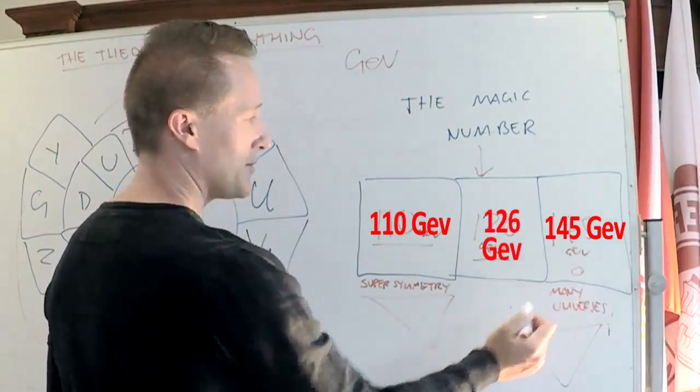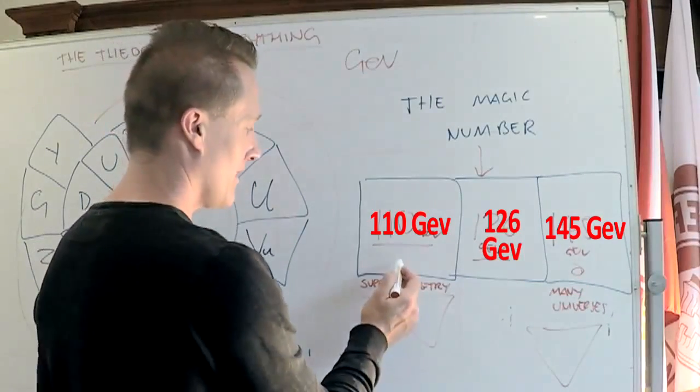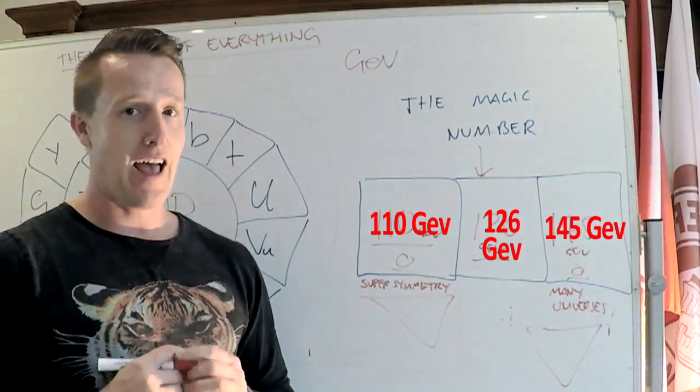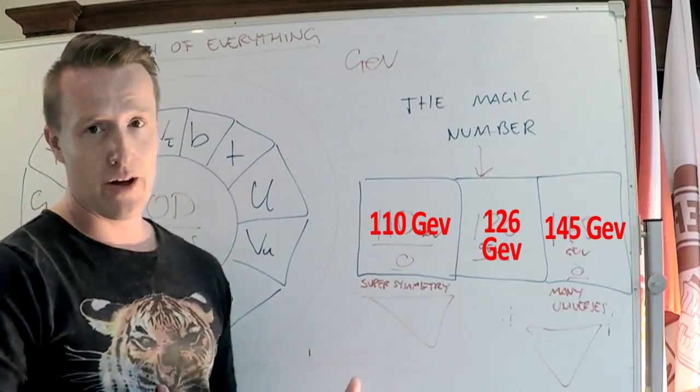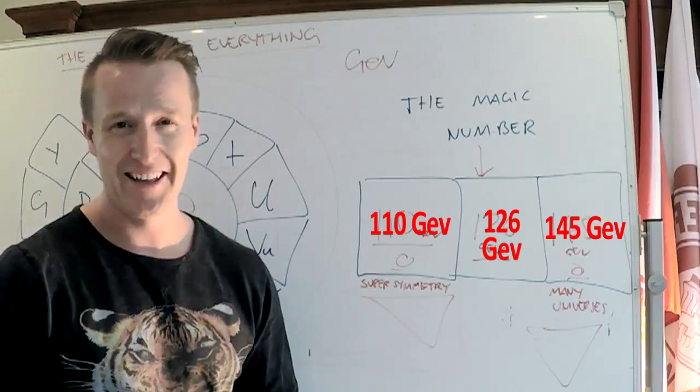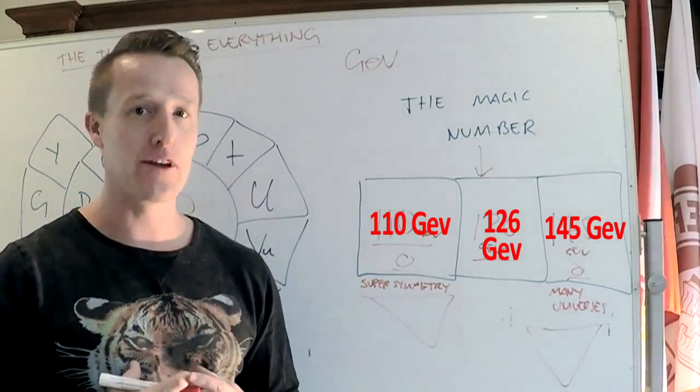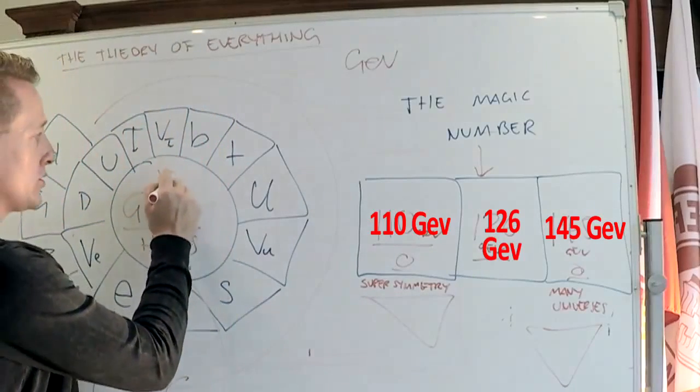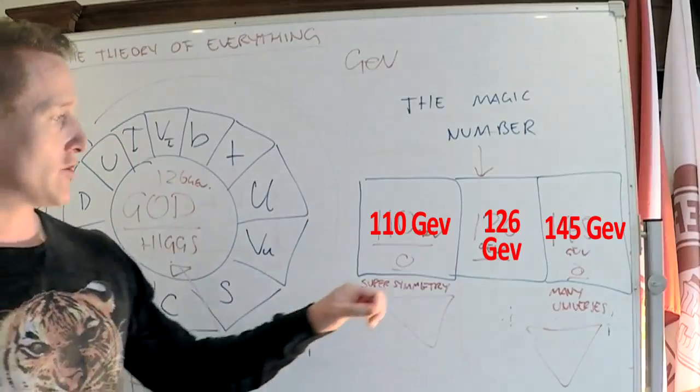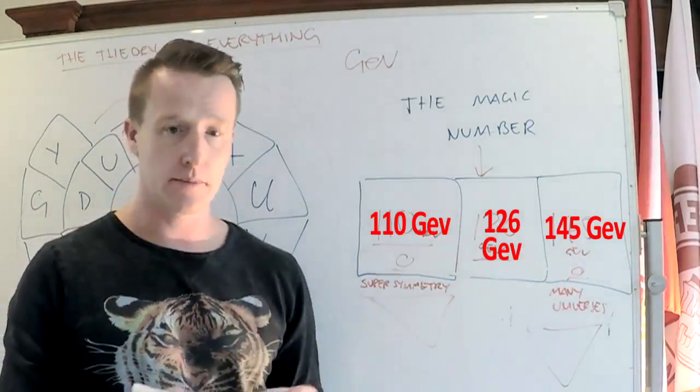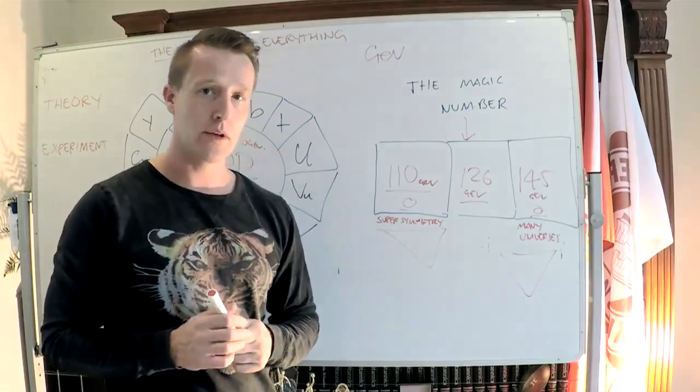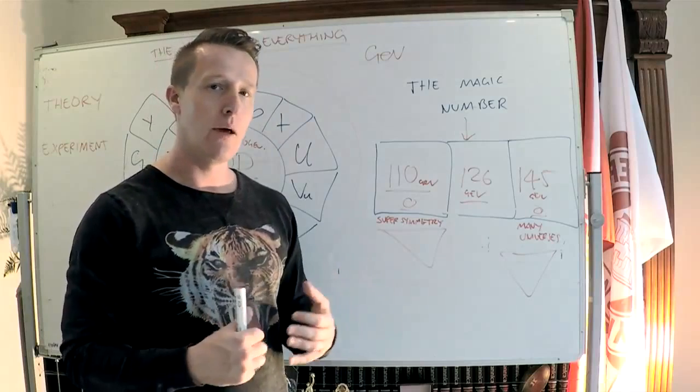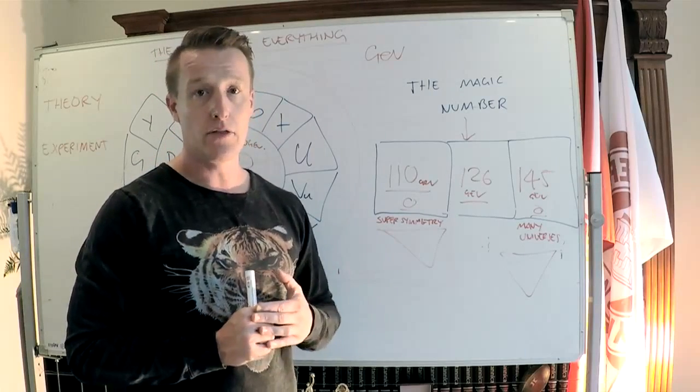So supersymmetry wasn't the right weight. Many universes wasn't right nor was supersymmetry the right weight. It's an incredible finding. It basically says we don't know. We don't know how the universe really works. We're getting closer because we now know the weight of the God particle. We know that we've got 126 GeV, but supersymmetry doesn't fit and neither does the many universe theory. So we need to go back to the drawing board. It's important that we know this and it can seem a little bit depressing that we've worked so hard to know so little, but we're now on the doorstep of finding out the truth.